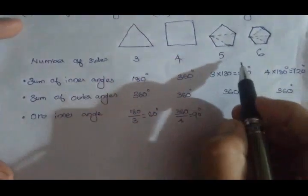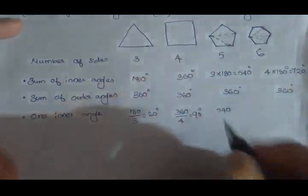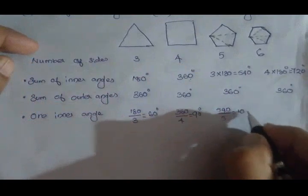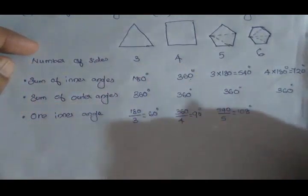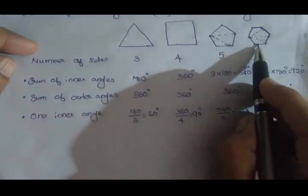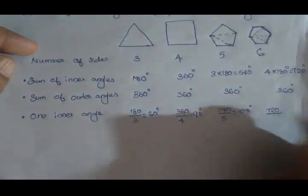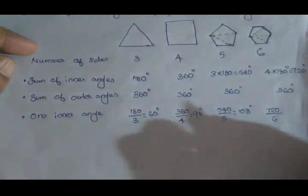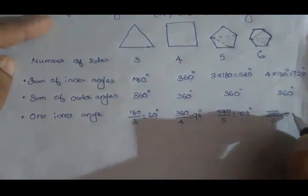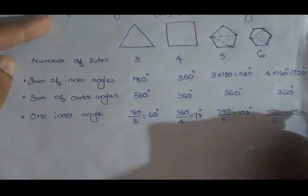The sum of inner angles of a pentagon is 540, so each angle is 540 divided by 5 = 108 degrees. The sum of inner angles of a hexagon is 720, so each angle is 720 divided by 6 = 120 degrees.